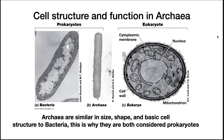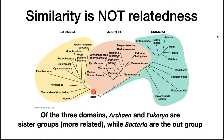We end this series of lectures on cell structure by talking about archaea and eukarya. Archaea are similar in shape, size, and basic cell structure to bacteria. It was not until 1977 that Carl Woese noticed the profound differences in their 16S ribosomal RNA and proposed that they were, in fact, a completely different life form. This apparent similarity was deceiving — archaea are phylogenetically more related to eukarya than to bacteria.